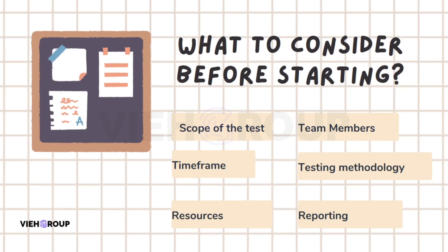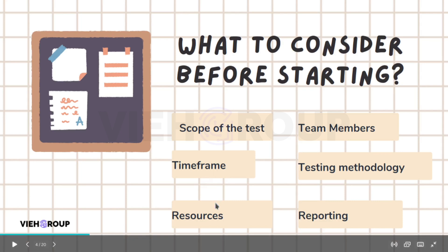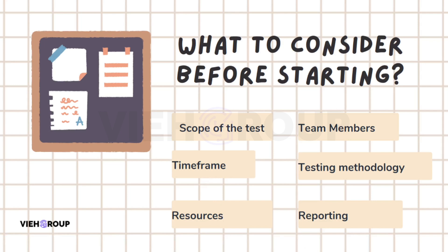Let's start with what to consider before starting. There are multiple parameters. First is the scope of the test — you must decide what you wish to examine and what shall be excluded. For example, if you're only interested in testing the security of virtual machines, you don't need to test the storage account. You also need to decide on a time frame and ensure you have enough resources allocated, such as access to an Azure account.